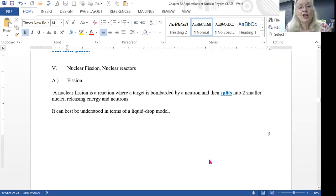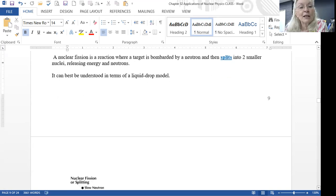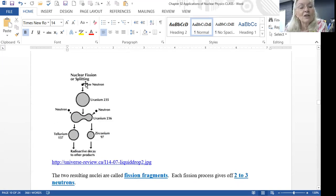Let's look at nuclear fission. Fission is a reaction where a target is bombarded by a neutron and then it splits into two smaller nuclei, and that releases energy and more neutrons. Normally we talk about this in terms of the liquid drop model. So fission is when your nucleus splits. Here's the little diagram. You have a slow neutron, it makes the uranium-235 unstable, it turns it to uranium-236, which is unstable.